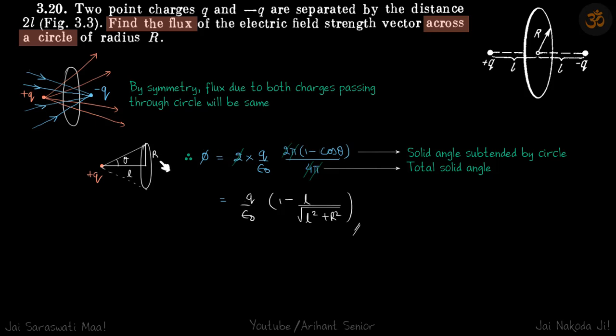So once again, what we did is two times flux due to plus Q. And flux due to plus Q is this solid angle divided by whole solid angle times total flux. Total flux for a charge is Q by epsilon naught times this fraction of solid angles.